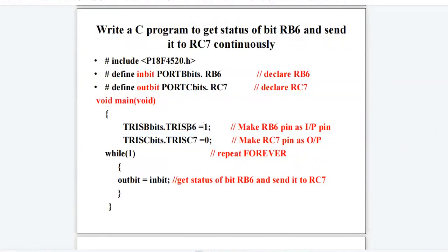Because we have to take the status of RB6 and send it to RC7, RC7 will be our output pin and RB6 will be input pin. Inside the while loop, inbit, which is nothing but PORTBbits.RB6, the status of that RB6 will be sent to outbit, which is nothing but PORTCbits.RC7.